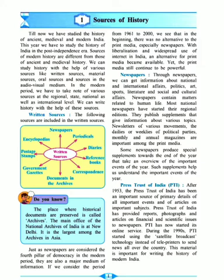Among written sources, the first one we'll look at is newspapers. Through newspapers we can get information about national and international affairs, politics, arts, sports, literature, and social and cultural affairs. Anything — from international events to Bollywood to job information — you can get it through newspapers. Newspaper content is related to all areas of human life, and most national newspapers have started regional editions.